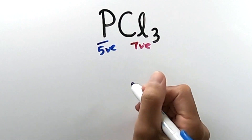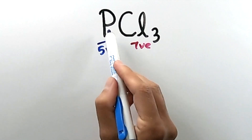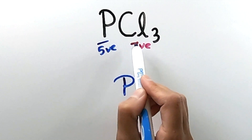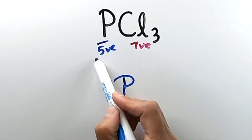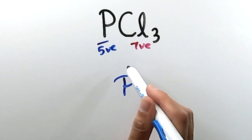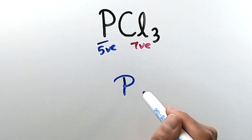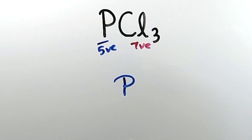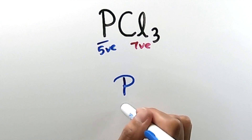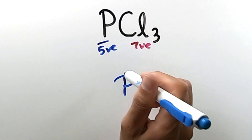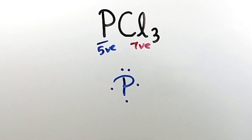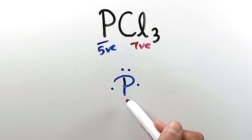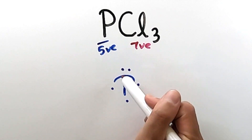I'm going to start by drawing the central atom, which is usually the atom that appears the least in a molecular formula — in this case it's phosphorus. Then I'm going to draw its five valence electrons as dots surrounding the P, one by one on each side: one, two, three, four, five. Notice we have three singular electrons and one lone pair.